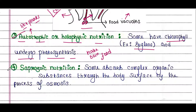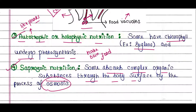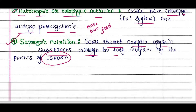Next type of nutrition is saprozoic nutrition. Here, some protozoa absorb complex organic substances through their body surface by the process of osmosis. Those complex organic substances get digested and the organisms get their food in this way.